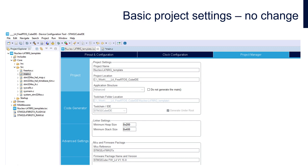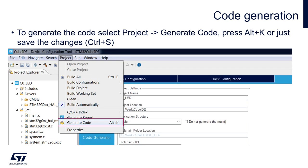The project from this exercise is stored within the solution projects and is named nucleo-l476rg-template.zip. You can import it within your current workspace. After this, please click 'Generate Code' within STM32CubeMX. If you are using STM32CubeIDE, please go to Project > Generate Code, or press Alt+K, or just save the changes by pressing Ctrl+S.